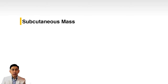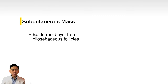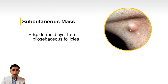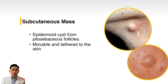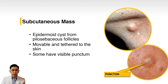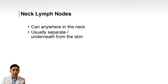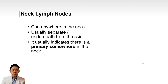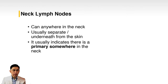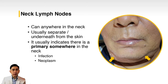Subcutaneous masses are also common in the adult population. Usually it is an epidermoid cyst from the pilosebaceous follicles — it is movable and tethered to the skin, and some will have a visible punctum. Next, neck lymph nodes can be anywhere in the neck; they are usually separate from or underneath the skin. Unlike subcutaneous masses, lymph nodes usually indicate there is a primary somewhere, since they are offshoots of an infection or neoplasm in the head and neck.